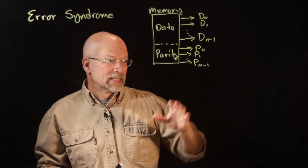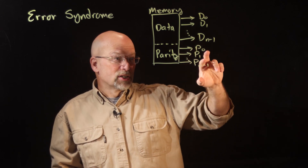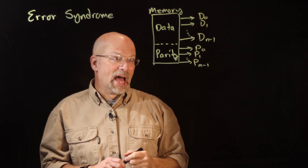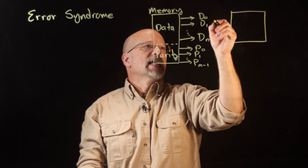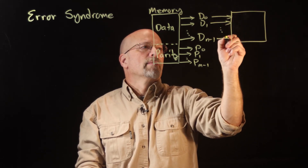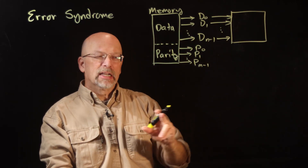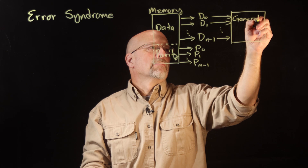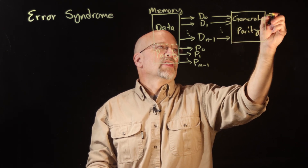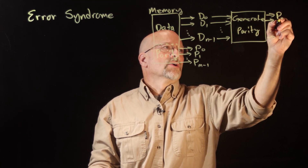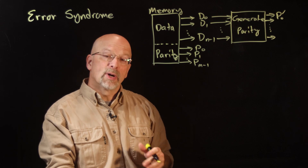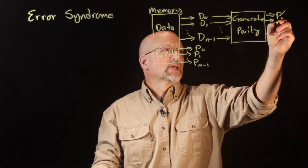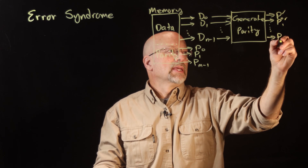The goal is to figure out which parity bits don't match up with the group of data bits that we've got now. What we do is take the data bits that we stored and run them through the same exact parity generator that we used to generate the original parity bits — so we once again generate the parity bits. Coming out of this, we get P0 prime, P1 prime, P sub M minus 1 prime — the prime notation identifying these as calculated after storage.